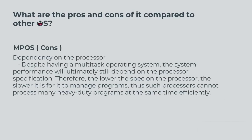Multiprocessing OS cons: dependency on the processor. Despite having a multitask operating system, the system performance will ultimately still depend on the processor specification. Therefore, the lower the spec on the processor, the slower it is to manage programs, and such processors cannot process many heavy-duty programs at the same time efficiently.